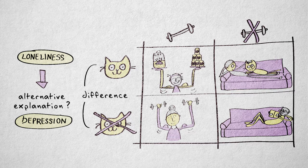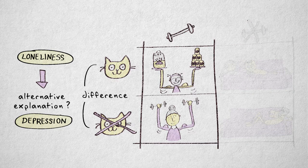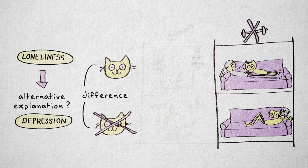We now consider the difference in depression between the cat therapy and control group, first for the active people, and then for the inactive people. We control for activity, in fact holding it constant, by considering each activity level separately.